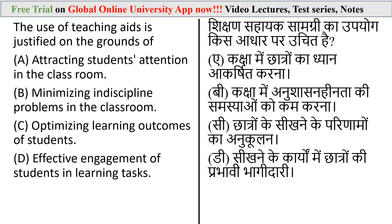Question: The use of teaching aids is justified on the ground of? Options are: attracting student attention in the classroom, minimizing indiscipline problems, optimizing learning outcomes, and effective engagement of students in learning tasks. The correct answer is option C — the use of teaching aids is justified on the ground of optimizing learning outcomes of the student.